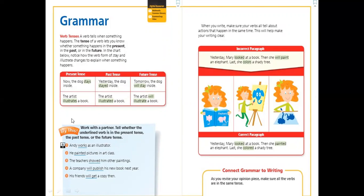Let's look at this schedule, for example. Present tense: now the dog stays inside. So this is how we can use a present tense to express or to say that something is happening right now or in the present.